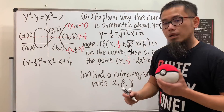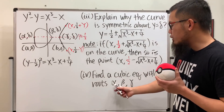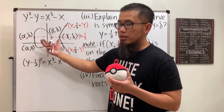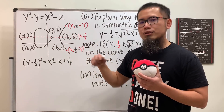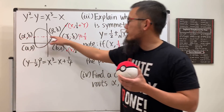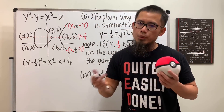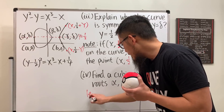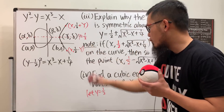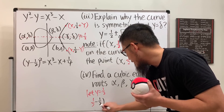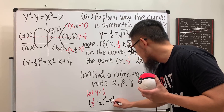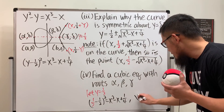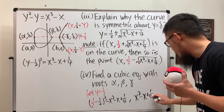For the next part, we find a cubic equation with roots α, β, and γ. Since the curve has been shifted up by 1/2, we treat y = 1/2 as the new x-axis. We let y = 1/2 and plug into the completed-square equation: (1/2 - 1/2)² = x³ - x + 1/4, giving the cubic equation x³ - x + 1/4 = 0.